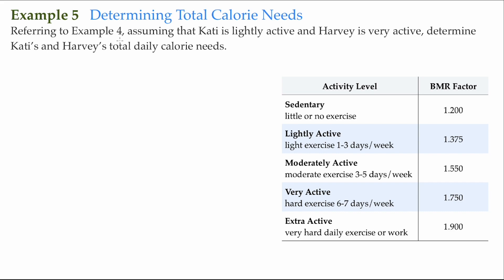Referring to Example 5, assuming that Katie is lightly active and Harvey is very active, we need to determine Katie's and Harvey's total calorie needs. We determined in the earlier example Katie's BMR — we're going to round her BMR to 1,430 calories. That's how many calories she needs while she's inactive to sustain her weight.